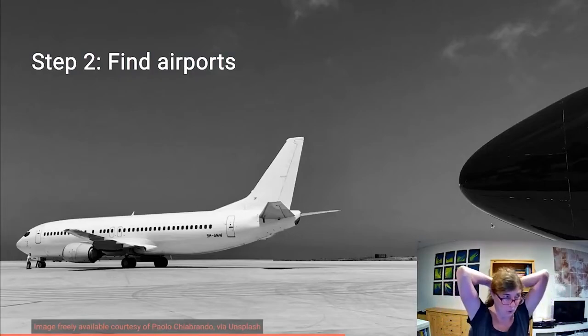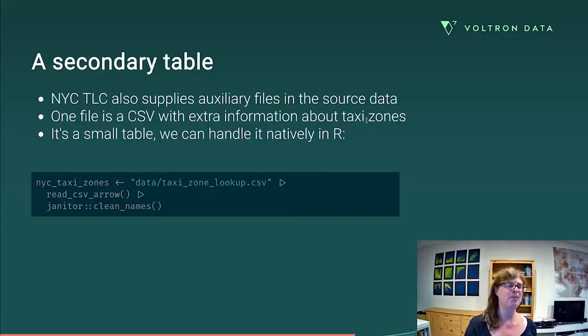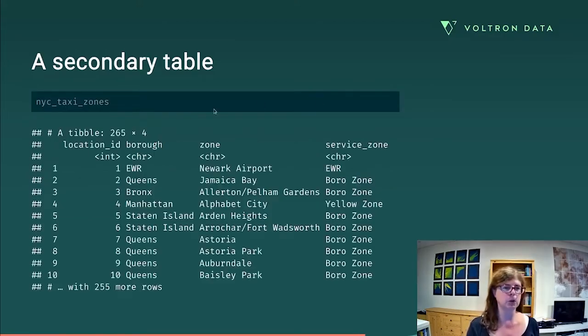Which locations? Currently, all I have are these numeric IDs. Those don't solve my problem. I need to know which of those numeric IDs correspond to the airports. Luckily for me, there is some auxiliary files that get supplied along with source data. One of those is a CSV file, called taxizonelookup.csv, which has all of this extra information about those taxi zones. It's a small table. It means I can handle it natively in R without any complications. So I'll read the CSV. I'll clean up the names.